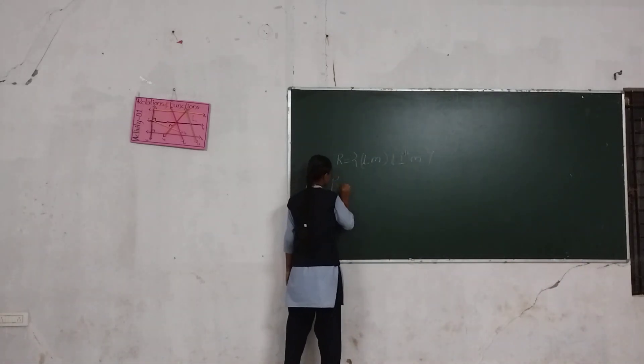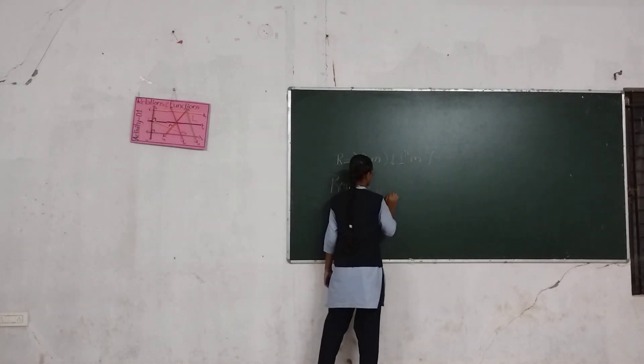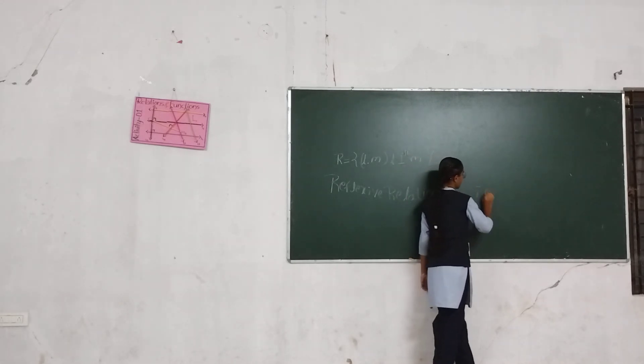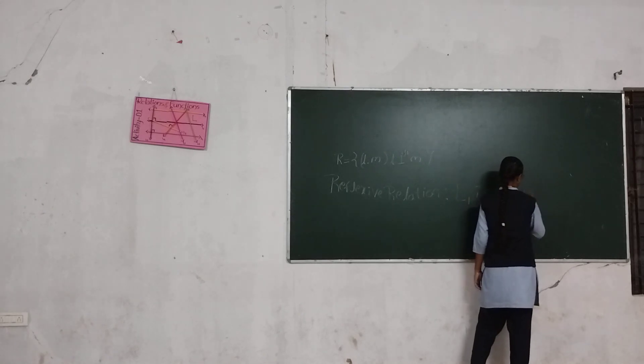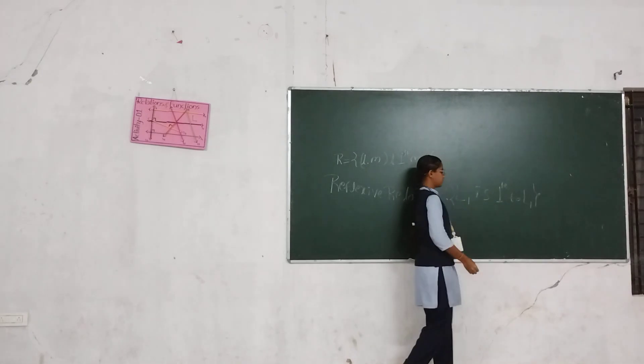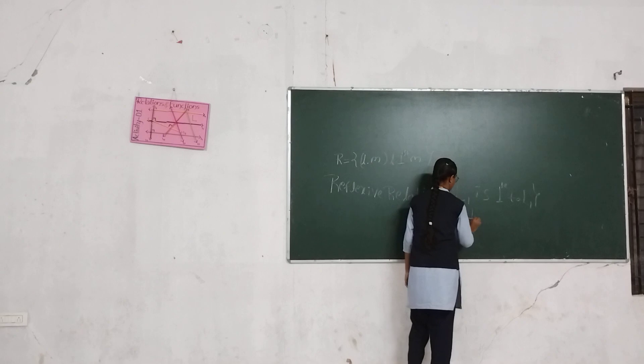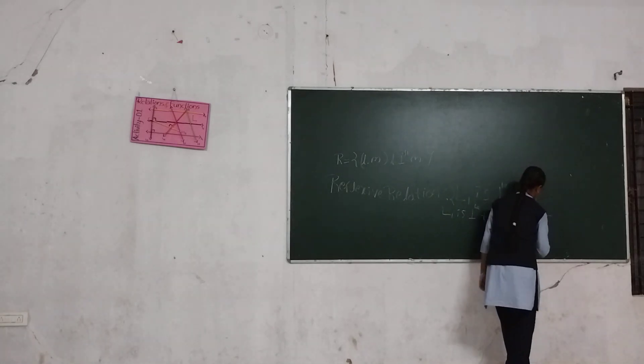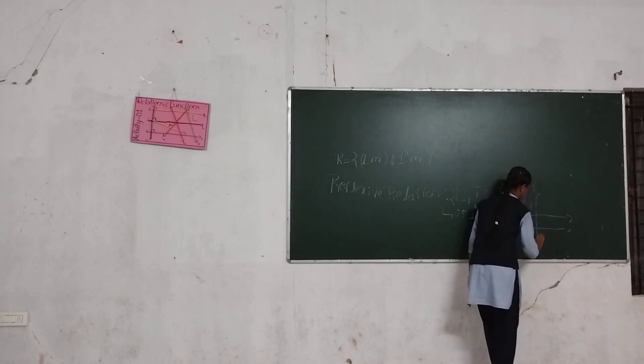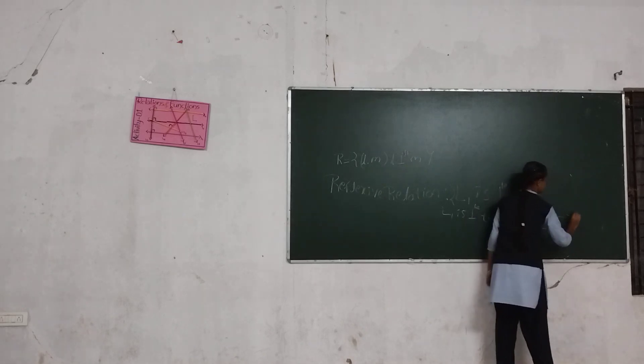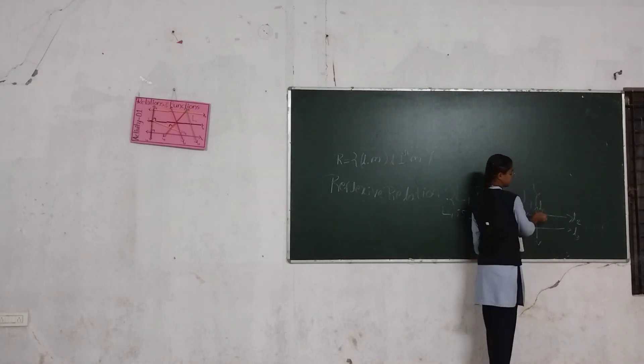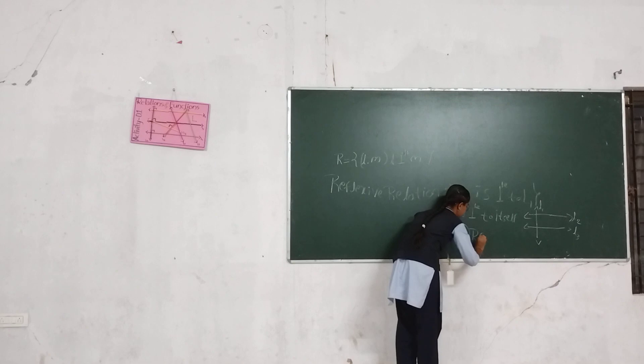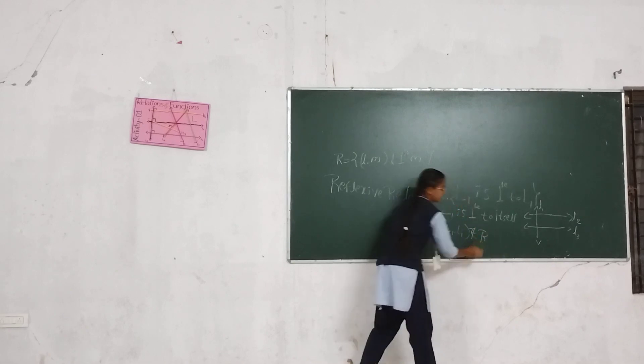First of all, reflexive relation. Reflexive relation, consider one example. L1 is perpendicular to L1. We can consider one of the diagrams. It is L1, it is L2, it is L3. L1 is not perpendicular to itself. Because it is not, L1 does not belong to R. Because it is not a reflexive relation.